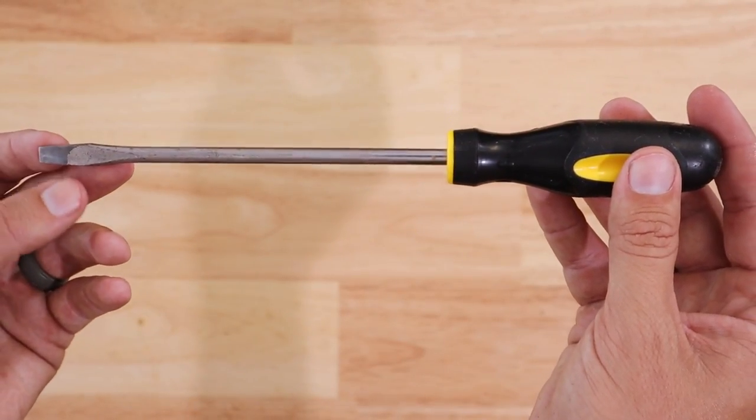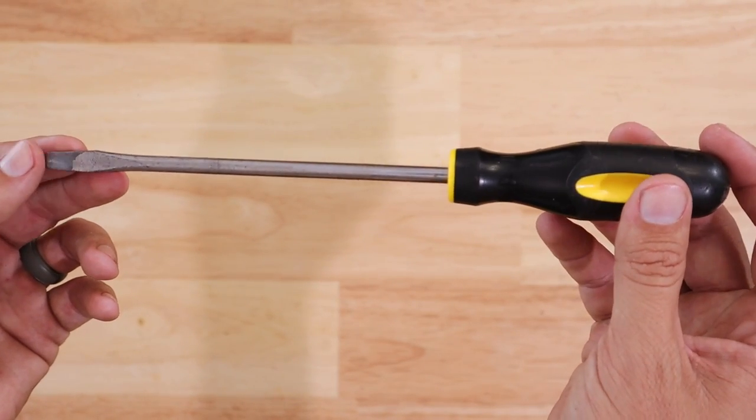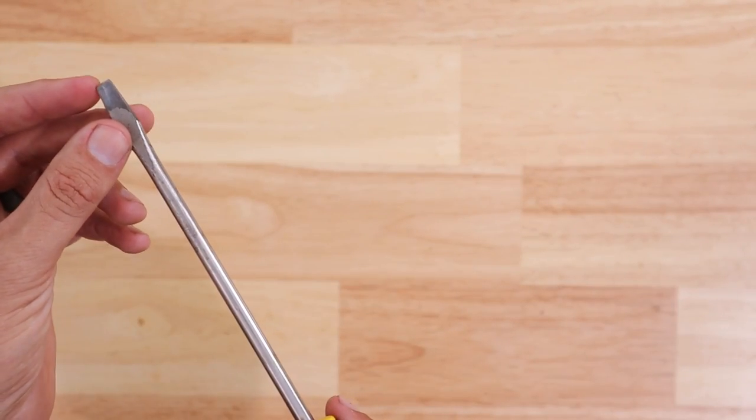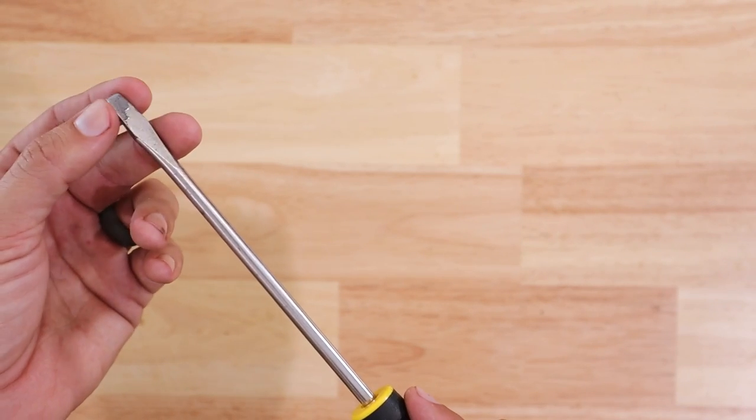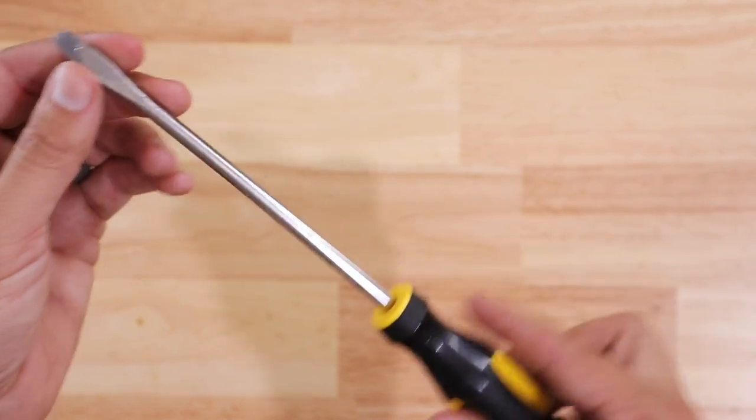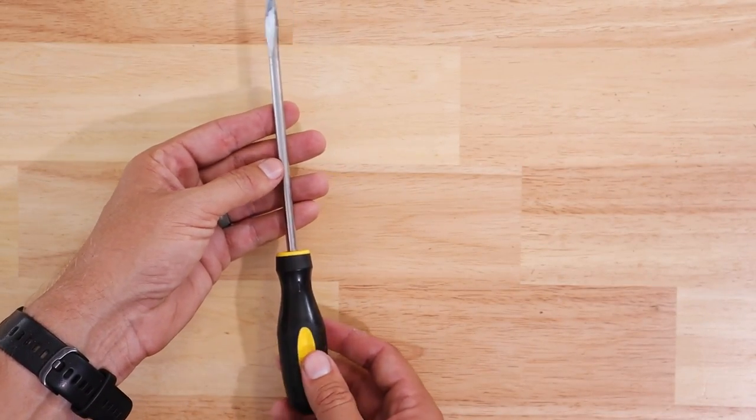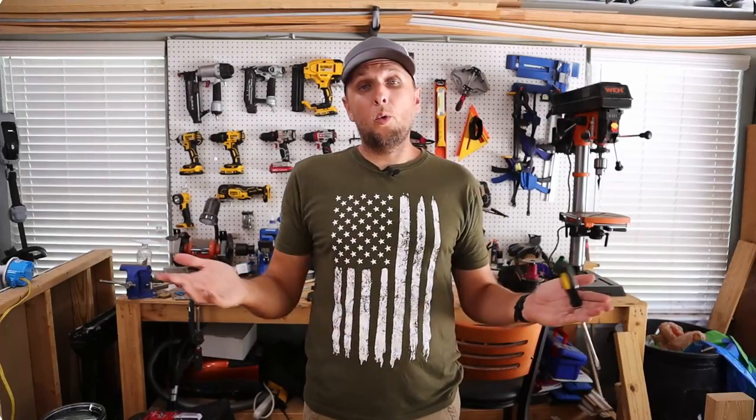So overall, the flatheaded screwdriver can definitely be used. It's used by professionals in many instances. The pros again are the added torque that you can get from being able to put it across that whole length of the terminal screw head. But the cons, of course, are it's not the greatest to use if you can only use one hand.